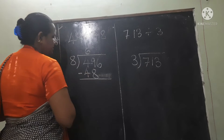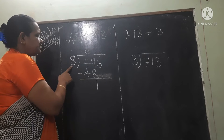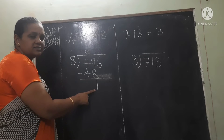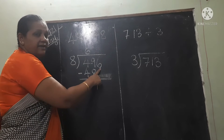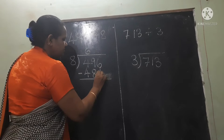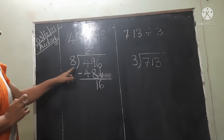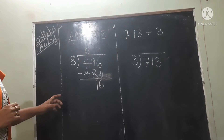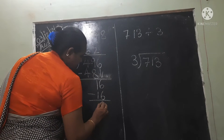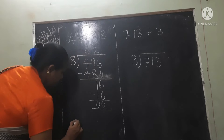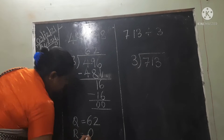Now put a minus sign here. 9 minus 8 is 1. Now look here — again the divisor is big and the dividend is small. We can't do division, but we are having another number 6, so this 6 we carry down. Now it becomes 16. In the 8 times table, will 16 come? Yes — 8 twos are 16. So our answer: quotient is 62 and remainder is 0.